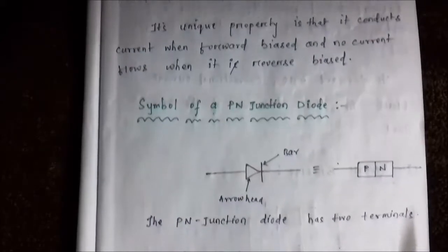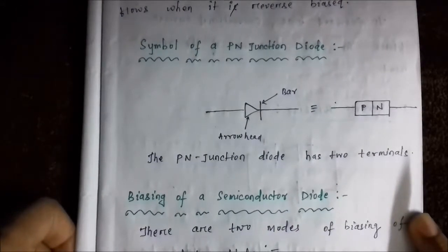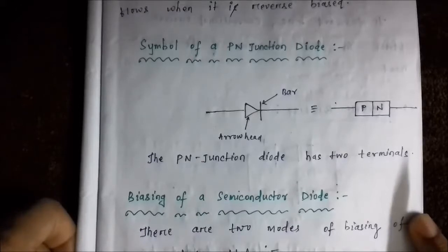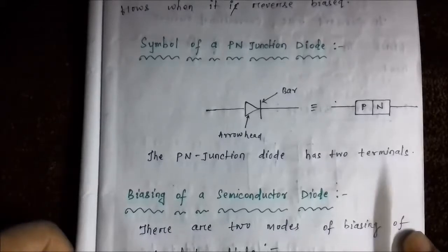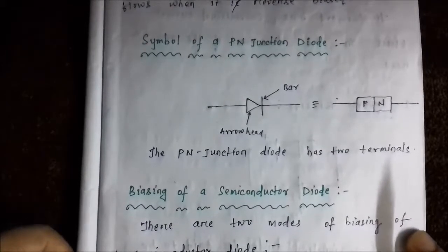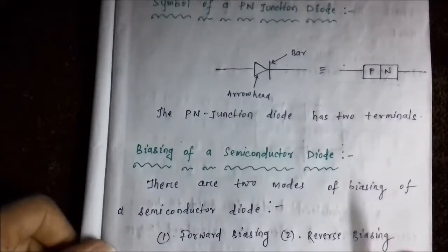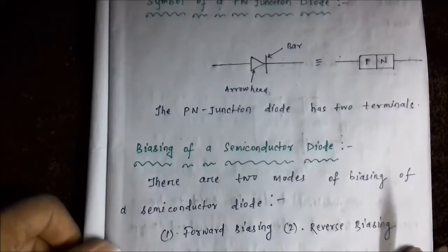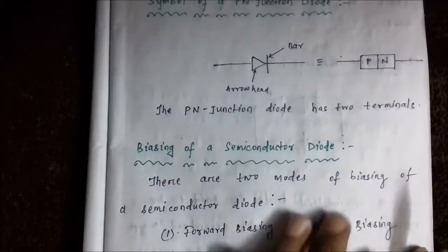Next we are going to discuss about the biasing of a semiconductor diode. Biasing simply means applying certain voltages to a device. Similar to the biasing of a PN junction, there are two modes of biasing a semiconductor diode: forward biasing and reverse biasing. We are going to study these two things one by one separately.